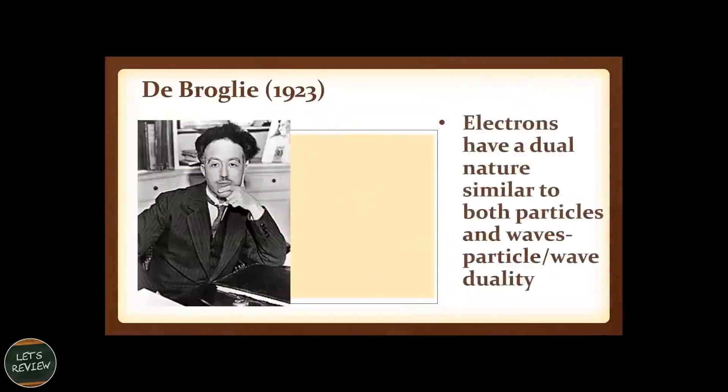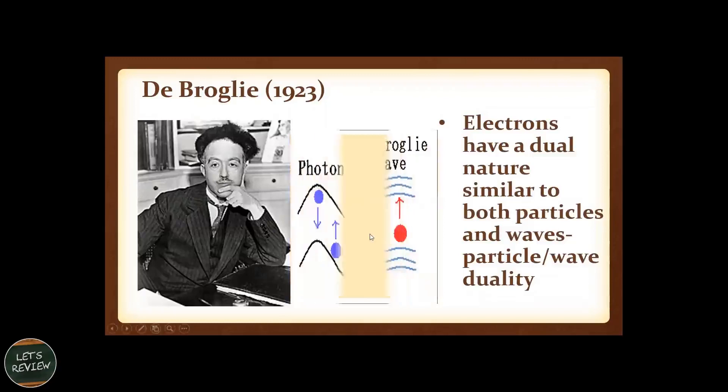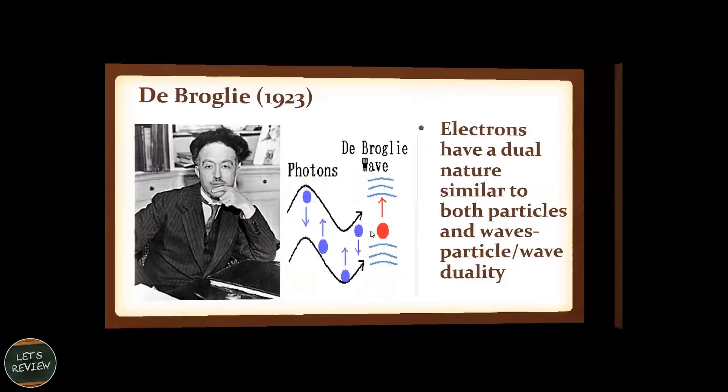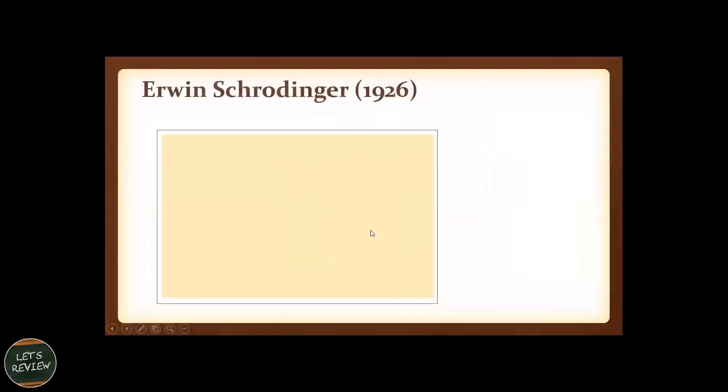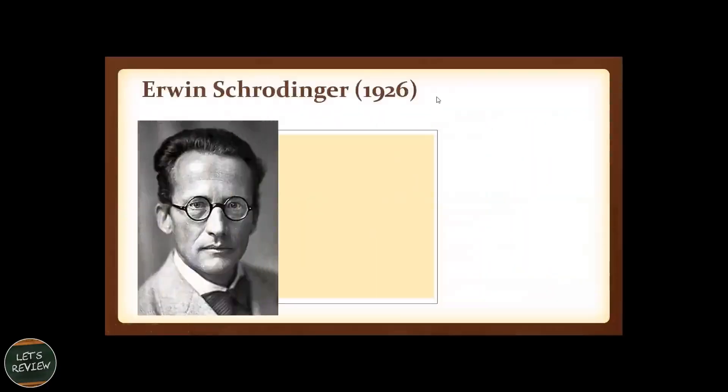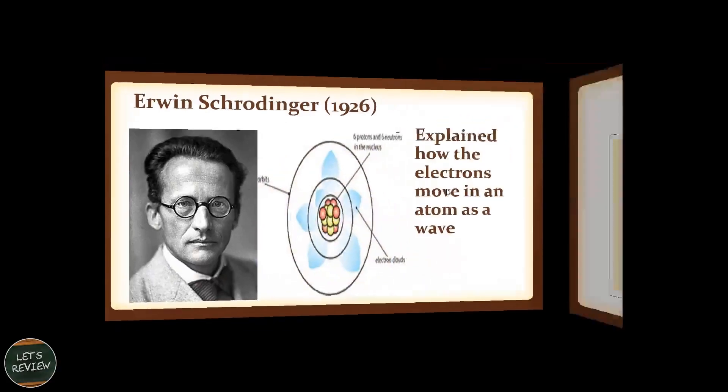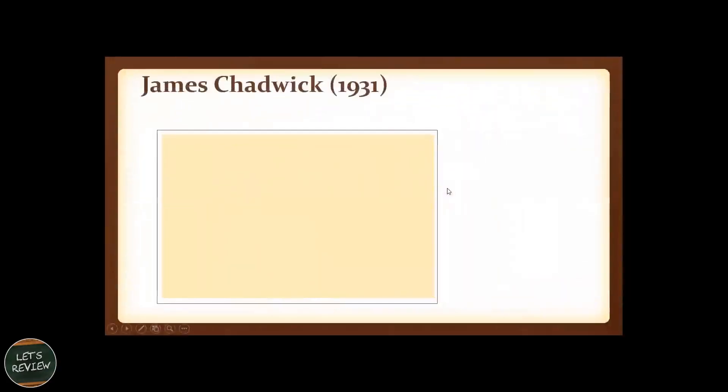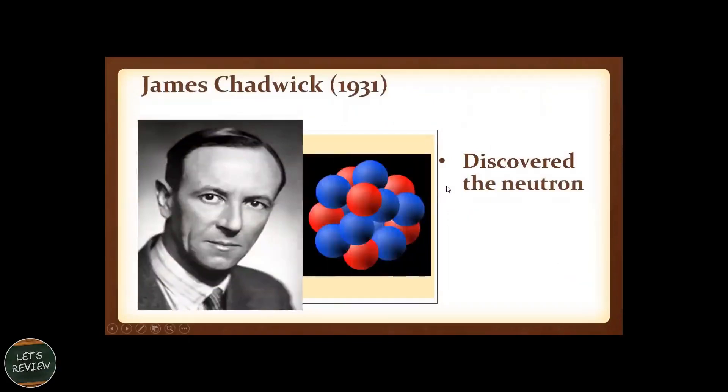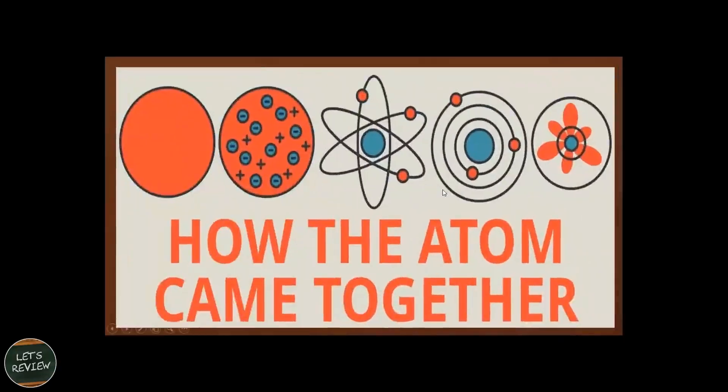In 1923, de Broglie said that electrons have a dual nature, similar to both particles and waves, or wave-particle duality. In 1926, Erwin Schrödinger explained how the electrons move in an atom as a wave. And James Chadwick discovered that inside the nucleus of the atom, there are also neutrons.